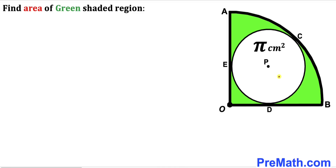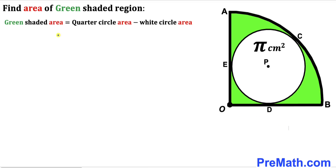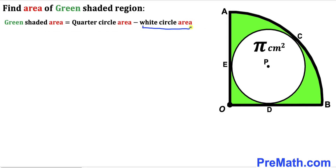I am going to label the radius of this white circle as lowercase r and the radius of the quarter circle as uppercase R. Our task is to find both values. The green shaded region area is going to be equal to the area of the whole quarter circle minus the area of the white circle inside, and we know the white circle area has been given as pi centimeter square. So our task is now to calculate the area of this quarter circle.